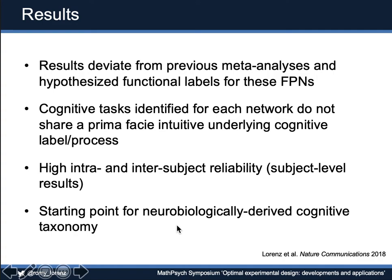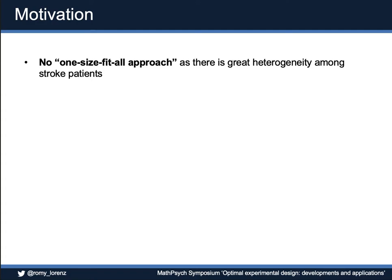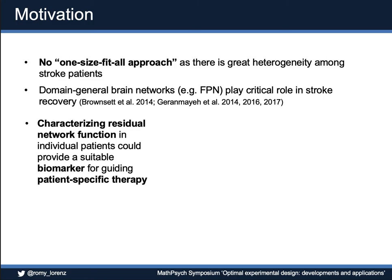Our next study is for stroke recovery. The motivation is that there is such great heterogeneity among stroke patients — no stroke is the same — so we can't use a one-size-fits-all approach. Interestingly, domain-general networks such as the frontoparietal network play a critical role in stroke recovery. If we could characterize the residual network function in individual patients, this could give us a really interesting biomarker for guiding patient-specific therapy — understanding how these patients still functionally work and what behavioral or stimulation paradigm to administer.